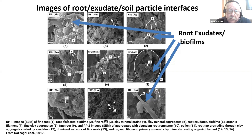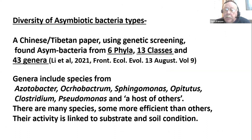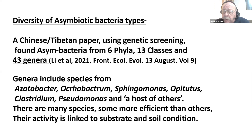There are many asymbiotic bacteria. I came across a Chinese paper from a Tibet soil where they found asymbiotic bacteria originating from five to six phyla, 13 classes, 43 genera, and numerous species after that. Some of these genera may be familiar, but many were not familiar to me. It's no surprise that every chemical company known to man is trying to isolate one of these bacteria and put it in a container — there are plenty to go around.